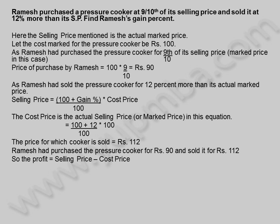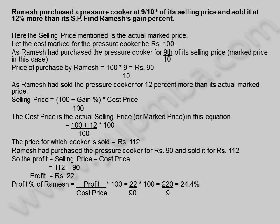So the profit is equal to selling price minus cost price, which is 112 minus 90. Profit is equal to 22 rupees. Profit percentage of Ramesh is equal to profit divided by cost price into 100, which is 22 by 90 into 100, equal to 220 by 9, equal to 24.4 percentage. Profit percentage earned by Ramesh is 24.4 percentage.